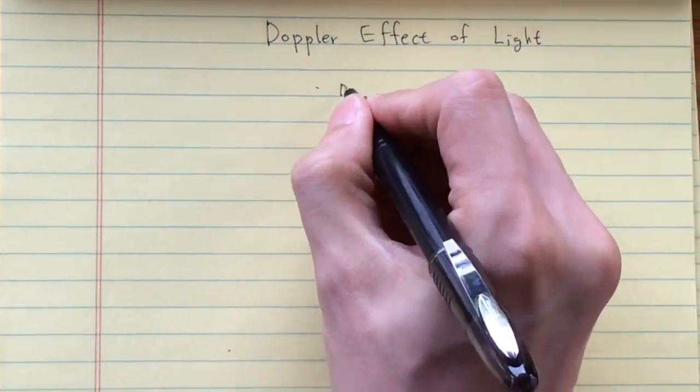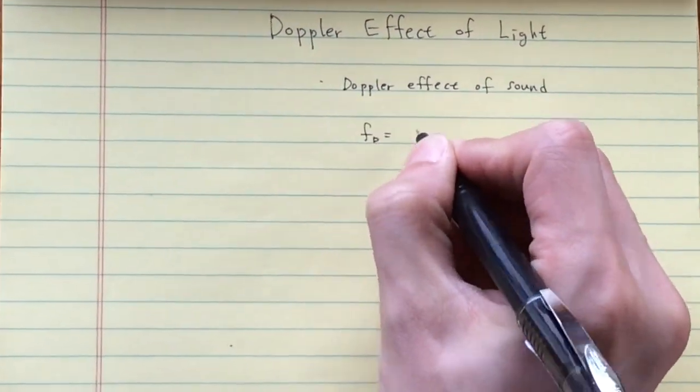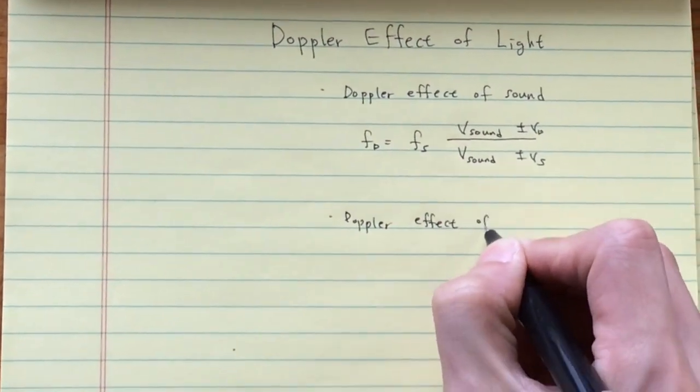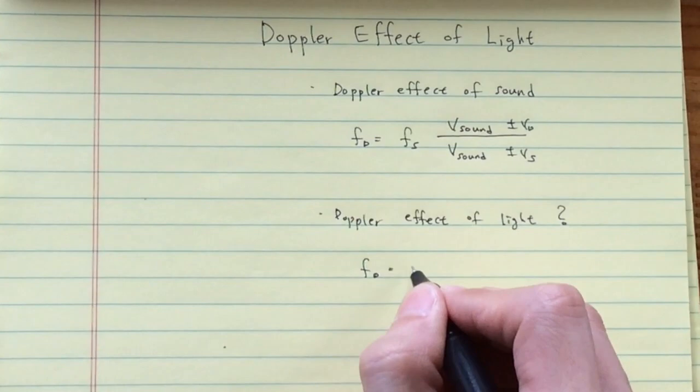Let's see the Doppler effect of light. This is the Doppler effect of sound. Then what is the formula for light? Let's guess the formula.